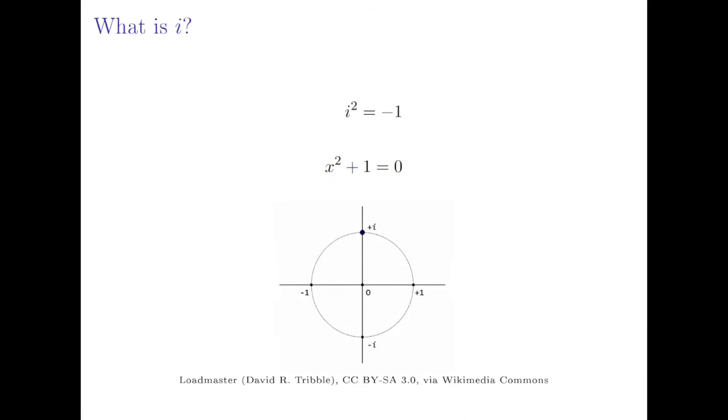And i is the number we define to be the square root of negative one, so that means i² equals negative one. You can also think of that as a solution to the equation x² plus one equals zero.